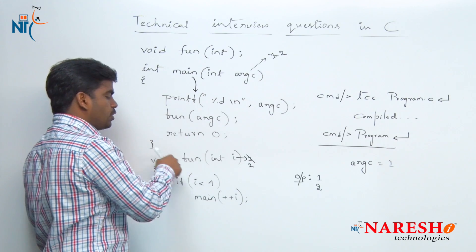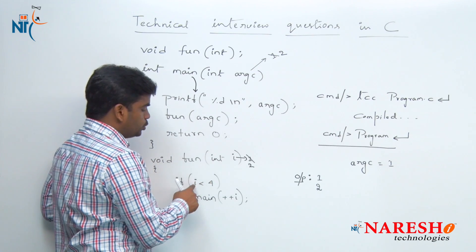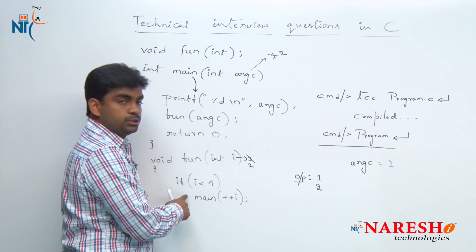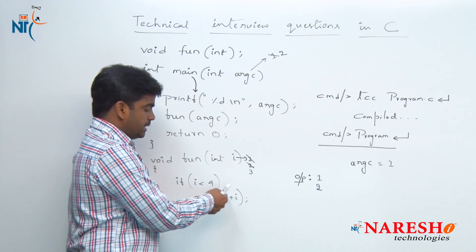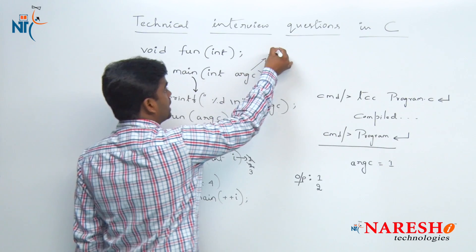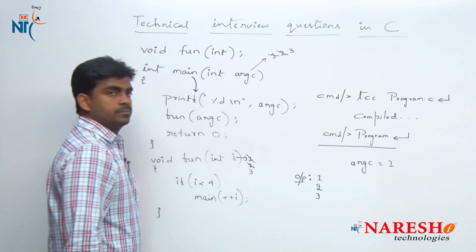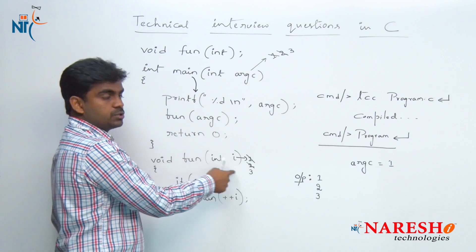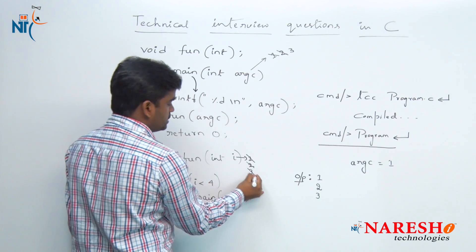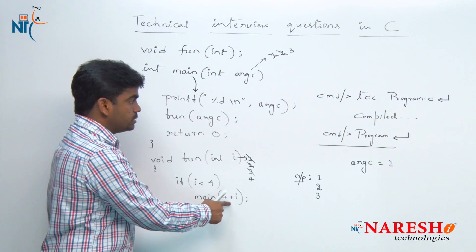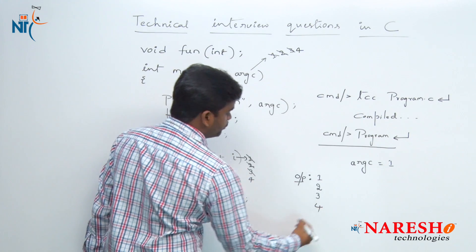Again fun method is called passing the value 2; i contains 2 and 2 is less than 4, condition is true. So ++i makes the value become 3. Again main method is called with value 3. Here argc value is 3, control moves inside and it will print that argc value 3. Again fun is called with 3, i value contains 3, 3 is less than 4 condition true. So first it becomes 4 and main method is called with value 4. Here argc value is 4, control moves inside and it will print argc value 4.